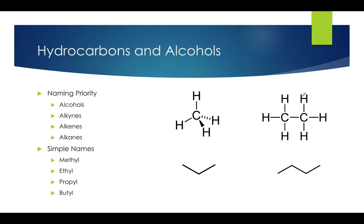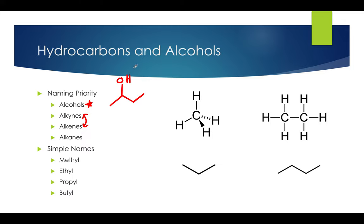Now let's talk about naming priority. Alcohols have priority over alkynes, alkenes, and alkanes. Alkynes and alkenes are actually interchangeable in priority, but regardless of whatever is present, the alcohol will always come out on top. So for the previous example, there was a bromine, but it's still going to be considered an alcohol. For another example, even if something looks like an alkane with an OH group coming off, the OH — or hydroxyl group — makes it an alcohol, so we would call it 2-butanol.